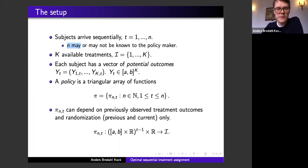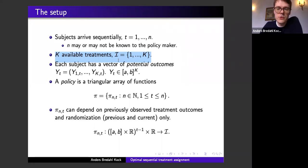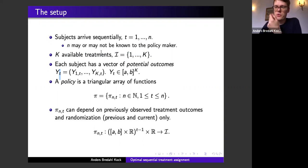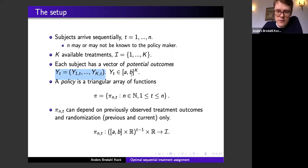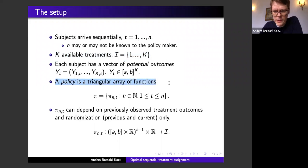Each subject is indexed by t rather than i because individuals arrive sequentially — subject t arrives at time t. Subject t has a K-dimensional vector of potential outcomes taking values in the K-fold product of the closed interval [a, b]. A policy in our terminology is a triangular array of functions, indexed by N and t, which for a given total number of assignments N indicates what assignment to make to the t-th arriving person.